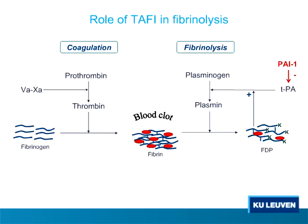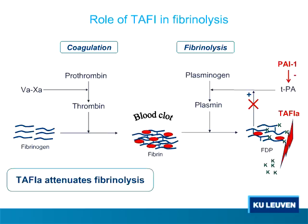Fibrinolysis occurs when plasminogen is converted into plasmin by plasminogen activators. Lysine residues exposed on the fibrin degradation products can bind simultaneously plasminogen as well as TPA, and the conversion of plasminogen to plasmin is accelerated. Upon activation of TAFI into TAFI-A, the lysine residues are removed.